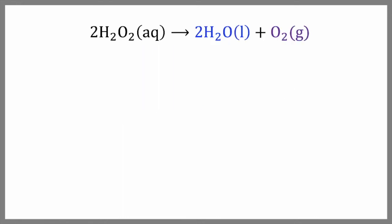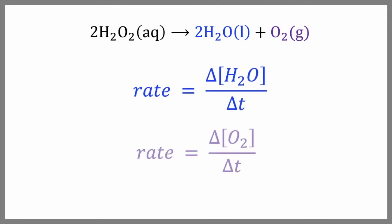If we want to calculate the rate of formation of water or oxygen, we don't have to include a negative sign in the rate equation, because the final concentrations are larger than the initial concentrations. So our rate of appearance of water is the change in the concentration of water divided by the time interval, and the rate of appearance of oxygen is the change in the concentration of oxygen over the same time interval.